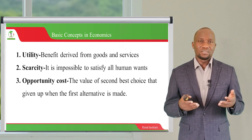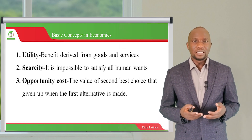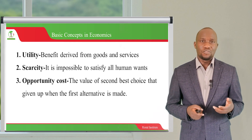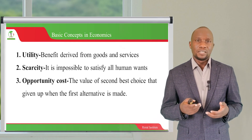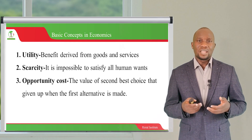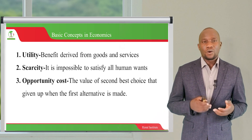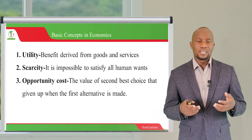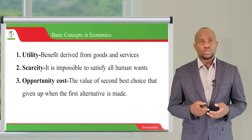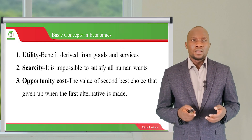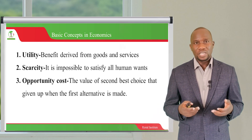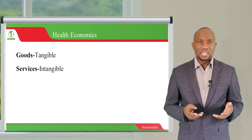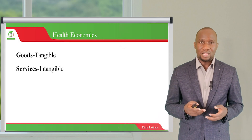Resources are often limited in number and we cannot satisfy everyone's needs — therefore we have scarce resources. Opportunity cost is when you buy a given product, there is an alternative that you have foregone. The cost of that foregone alternative is what we call the opportunity cost. We shall also frequently talk about goods, which are tangible products, and services, which are intangible.